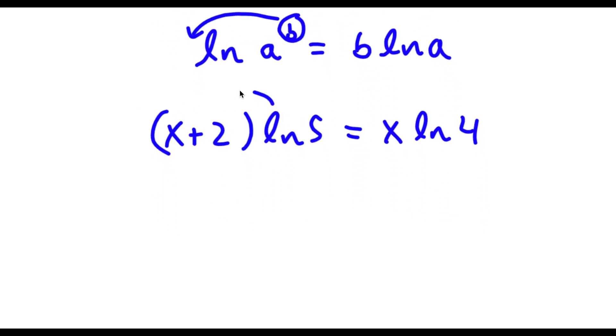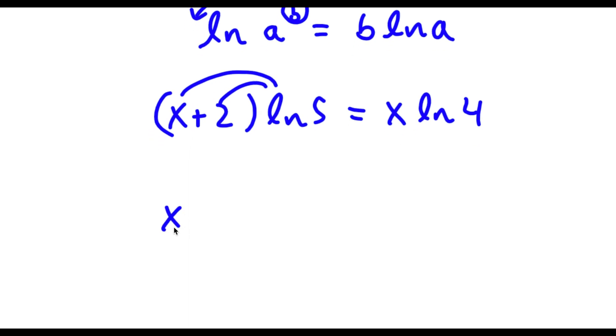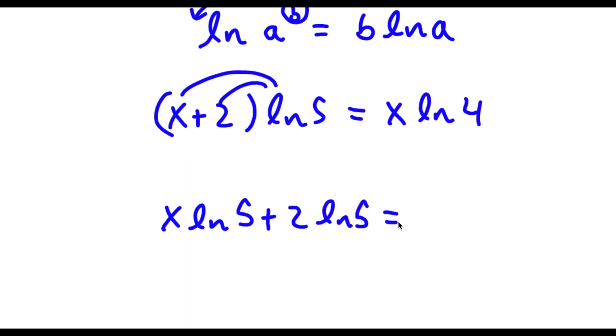Now if I distribute ln 5 with x plus 2, I get x times ln 5 plus 2 times ln 5 is equal to x times ln 4.